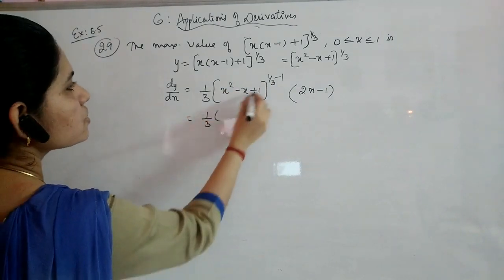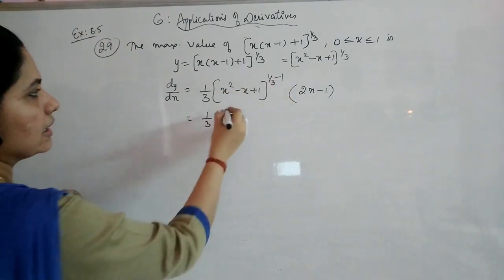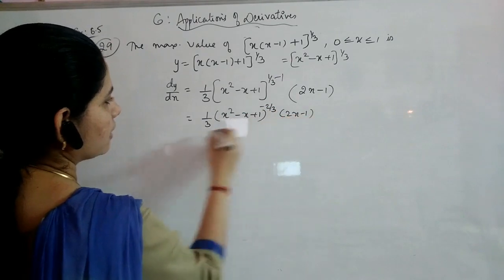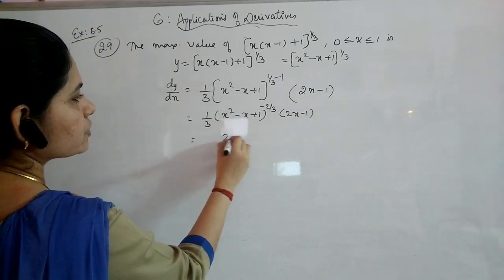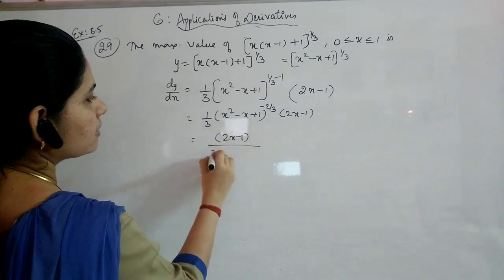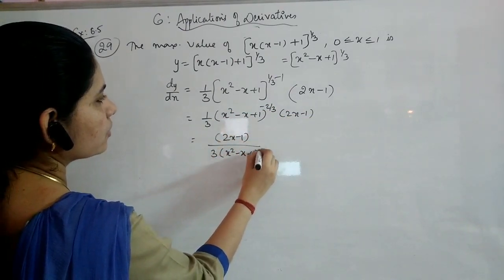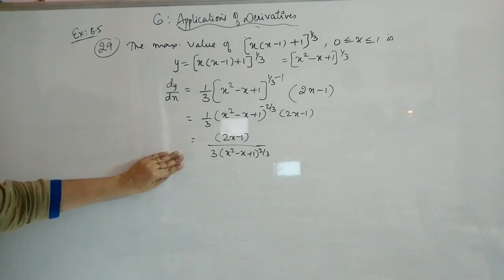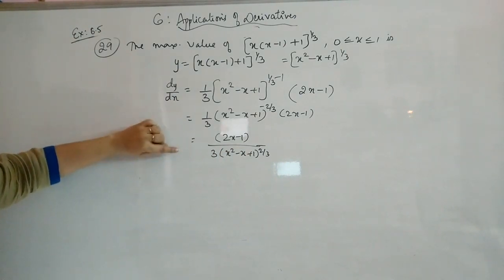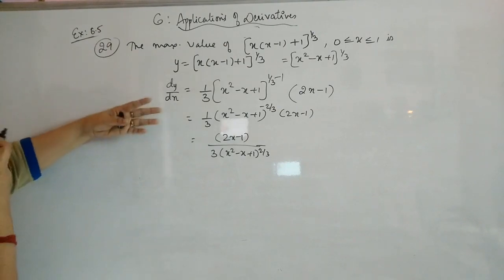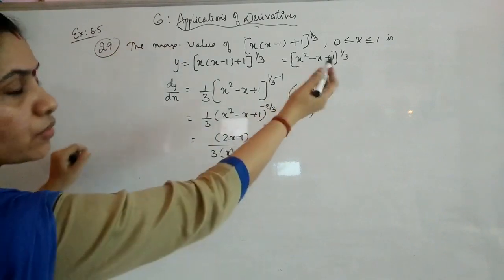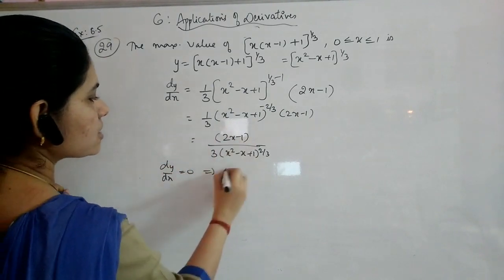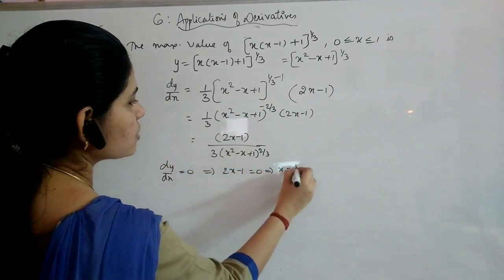Differentiating using the chain rule (x^n form): dy/dx = (1/3)(x² - x + 1)^(1/3 - 1) · (2x - 1) = (2x - 1) / [3(x² - x + 1)^(2/3)]. Equating to 0: 2x - 1 = 0, so x = 1/2 is the critical point.